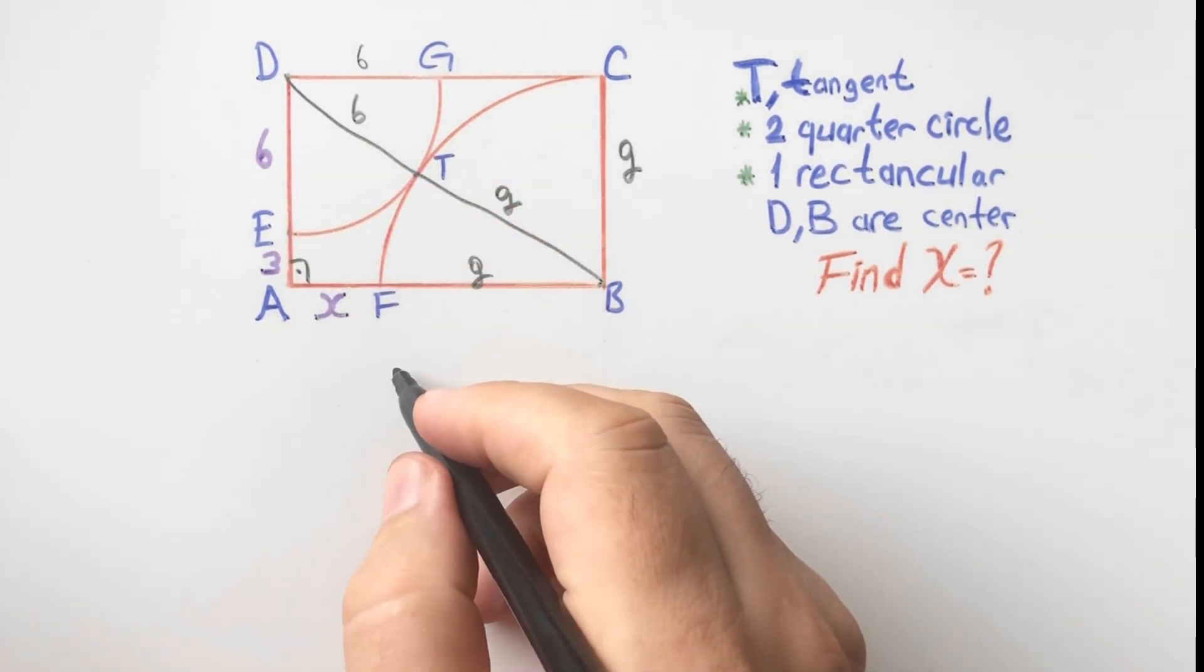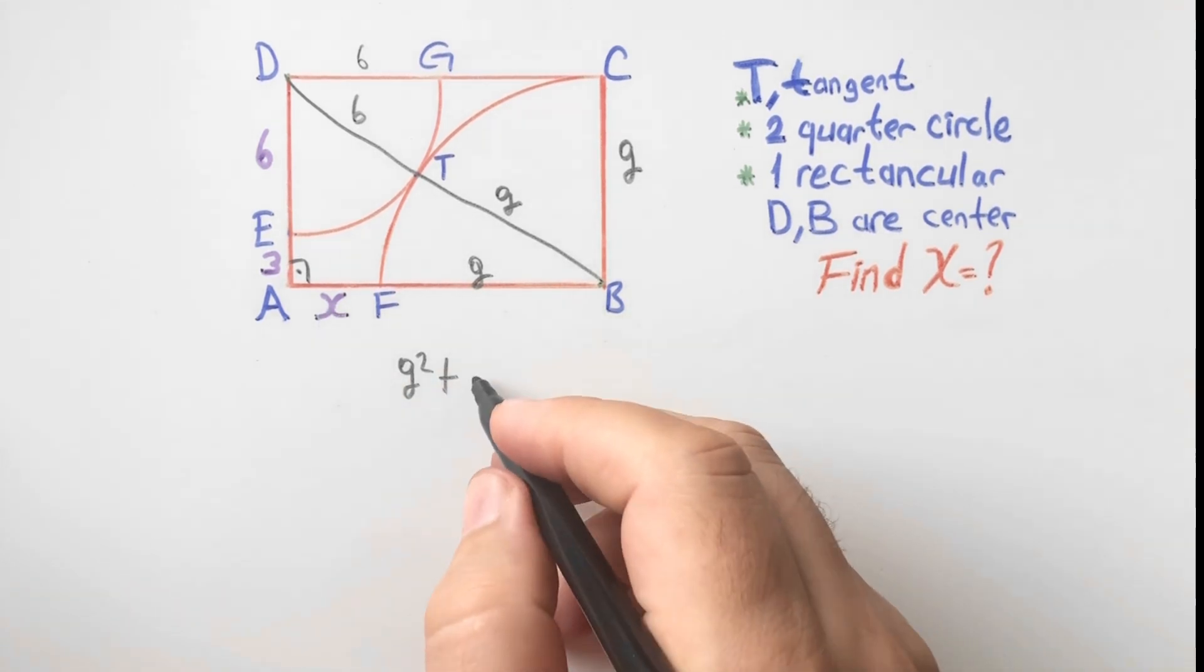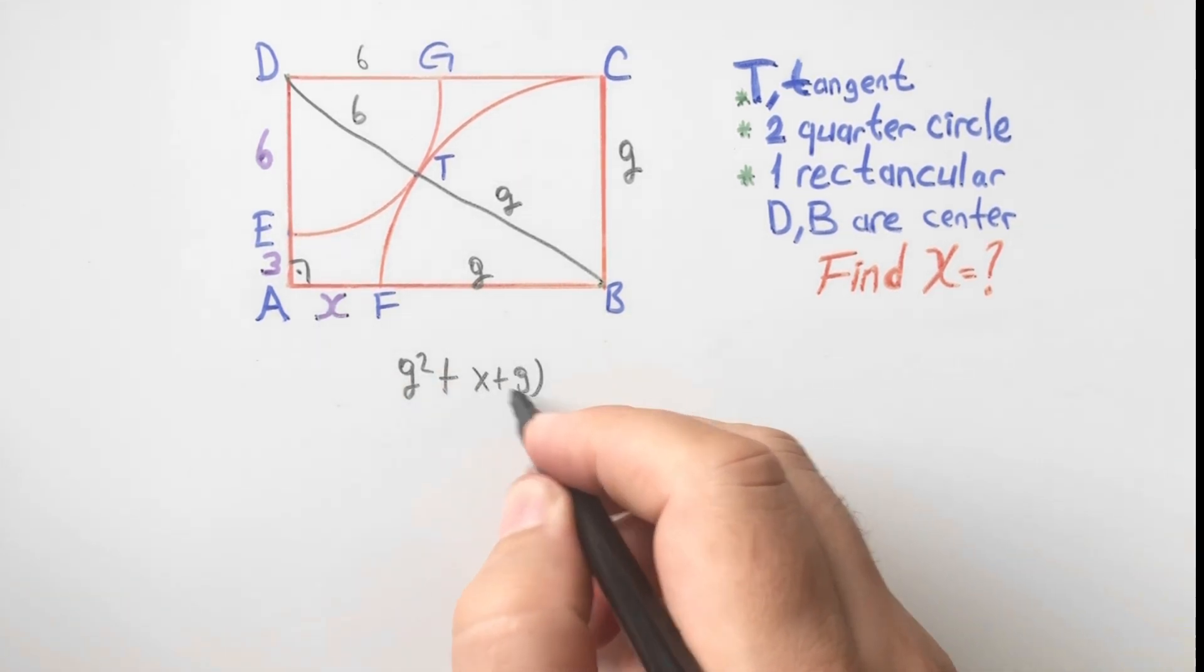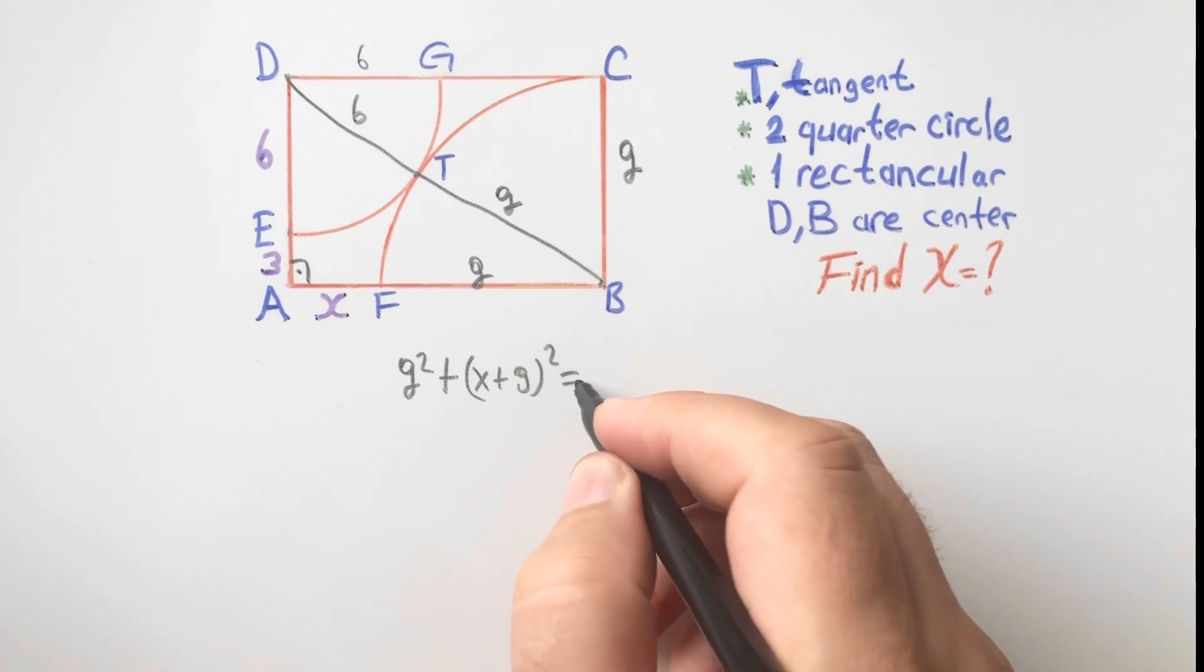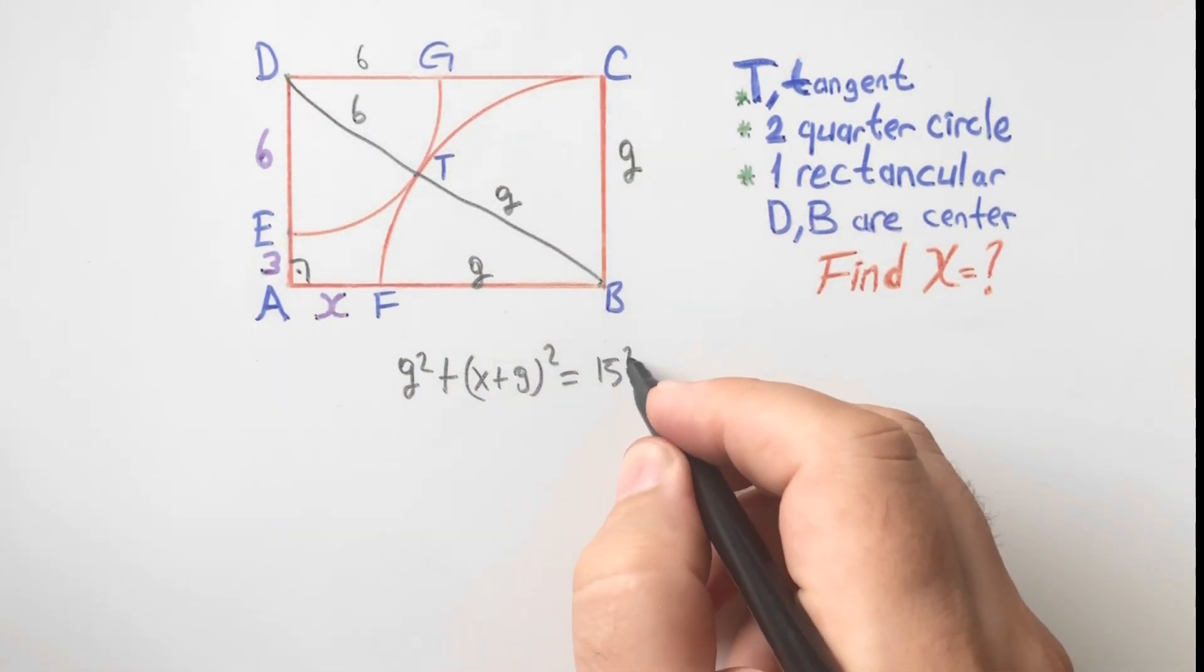This side, nine squared, plus this side, x plus nine, equals this side, 15 squared.